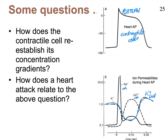After these ions have done their flowing in and out, the concentration gradients are out of balance, even though we've repolarized and returned the cell to its resting membrane potential. What fixes these concentration gradients is the sodium-potassium pump, and in the heart there are also calcium pumps. Remember, ion pumps always pump ions against their concentration gradient and always require ATP.